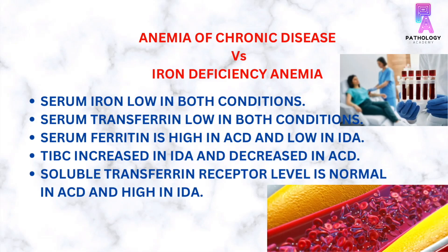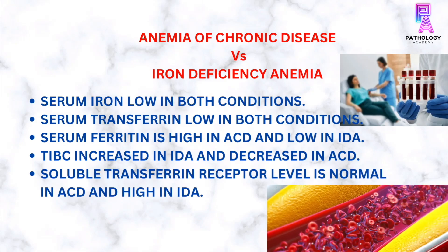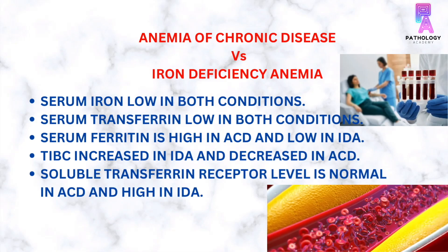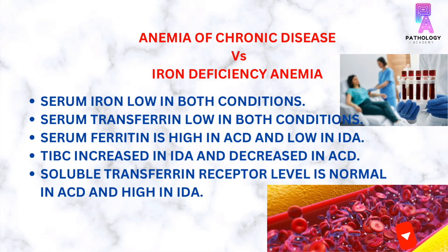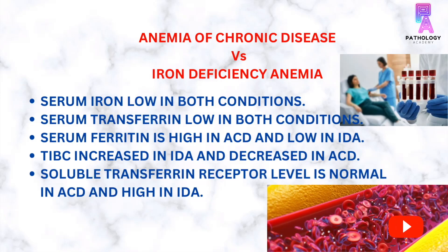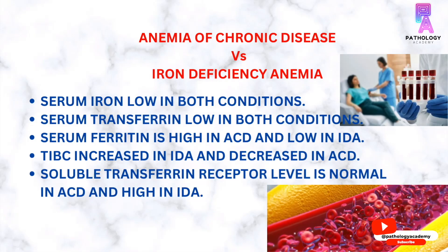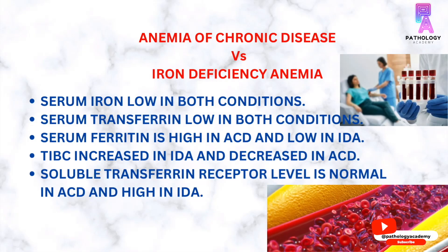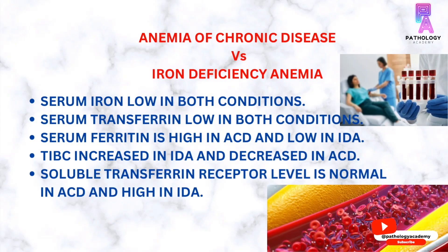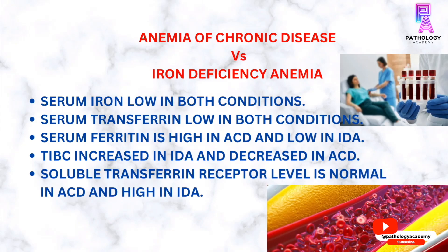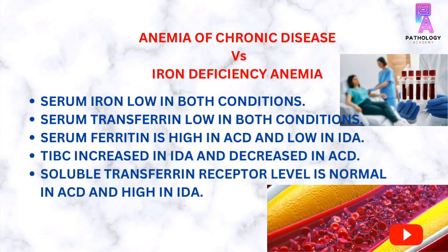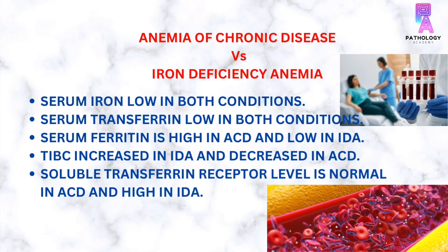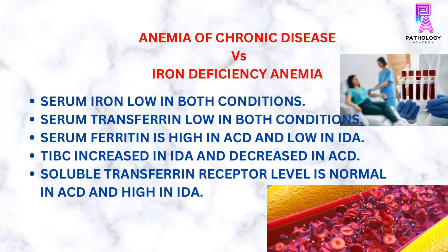In anemia due to chronic disease, there is increased storage iron or ferritin because ferritin is an acute phase reactant and it increases in inflammatory conditions. However, in anemia due to iron deficiency, the serum ferritin level is low.